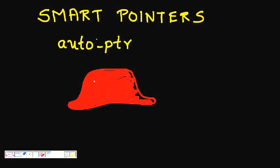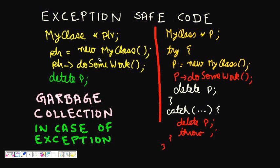Let's say I was writing code at my company. I wrote a class called MyClass and a pointer for it: MyClass* ptr, then I allocated memory with ptr = new MyClass. Then I do ptr->doSomeWork(), and after doing the work I call delete — so I've allocated memory, done the work, and deleted memory.